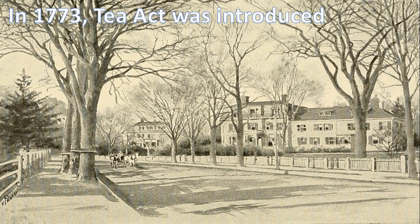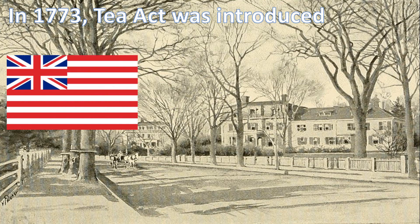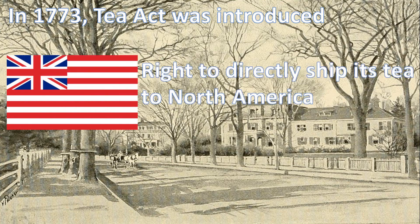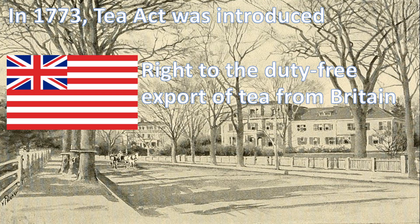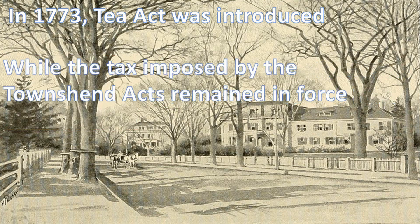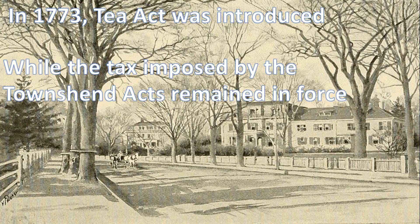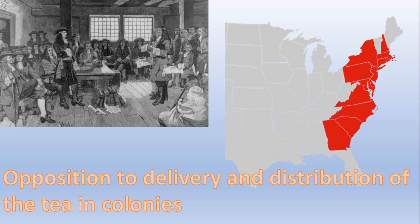In the year 1773, the Tea Act was introduced. The Act granted the East India Company the right to directly ship its tea to North America, and a right to the duty-free export of tea from Britain, while the tax imposed by the Townsend Acts remained in force. Colonists in the 13 colonies recognized the implications of the act's provisions and mobilized opposition to the delivery and distribution of the tea.